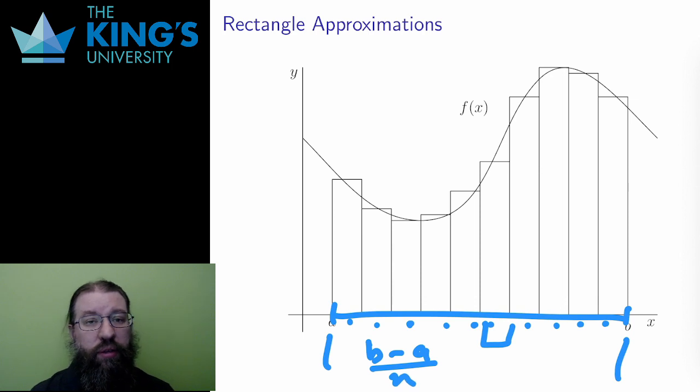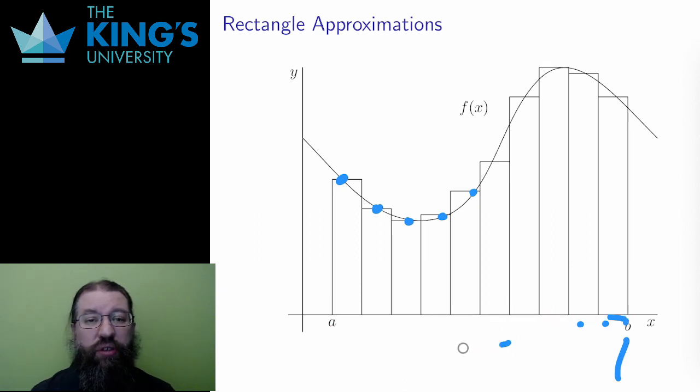But what about the height? The top of each rectangle meets the graph of the function at some point. This is some output of the function. I'll write this as f of x star. What is this star notation? This star notation here indicates that x is some point in the rectangle, but I really don't care which.